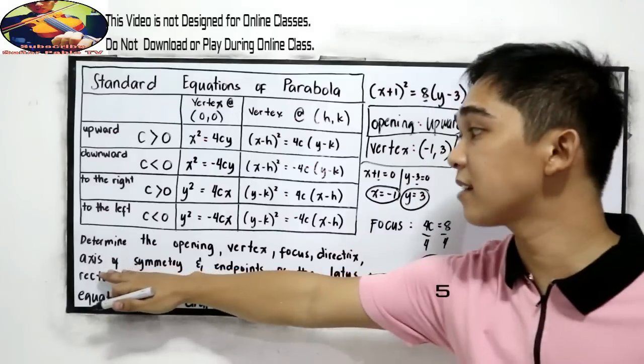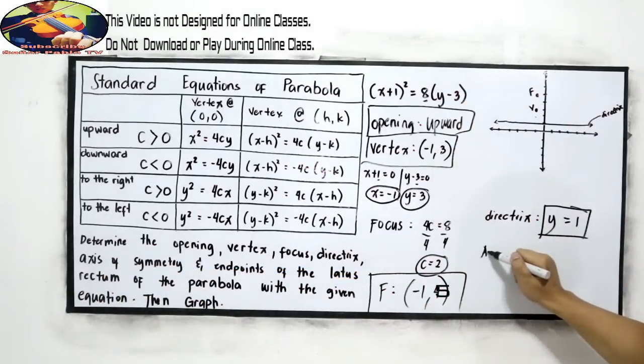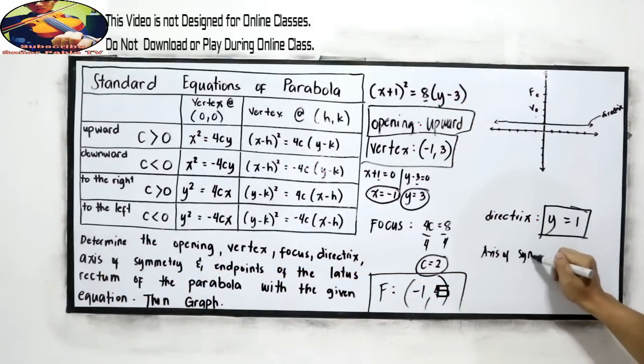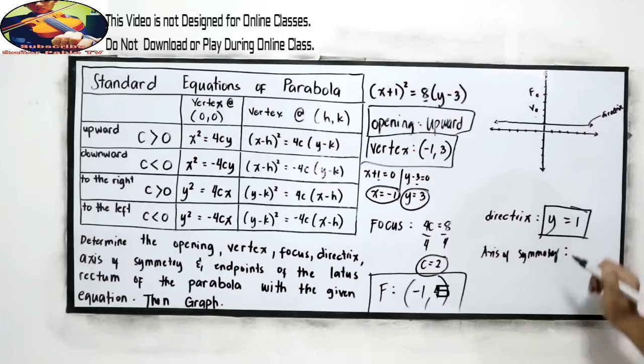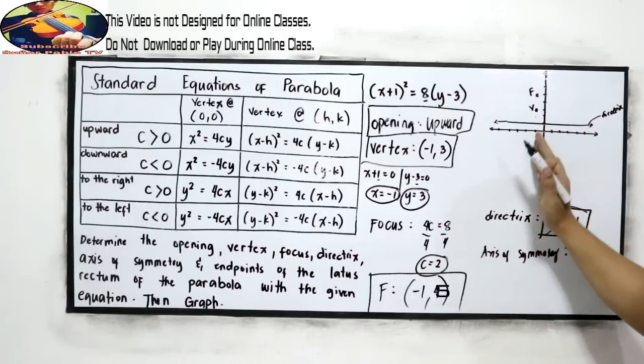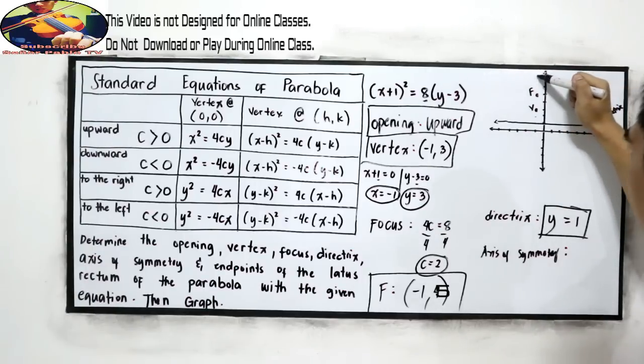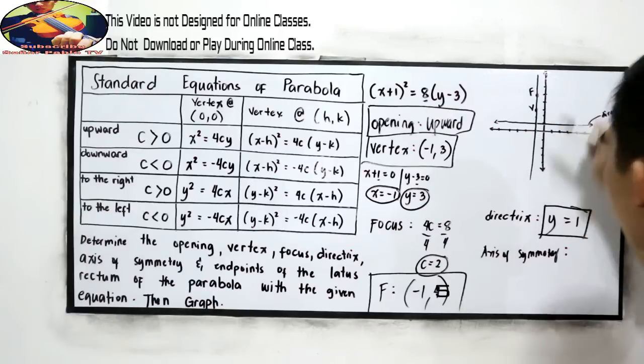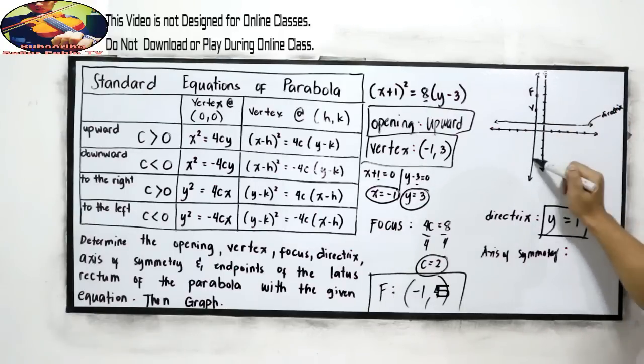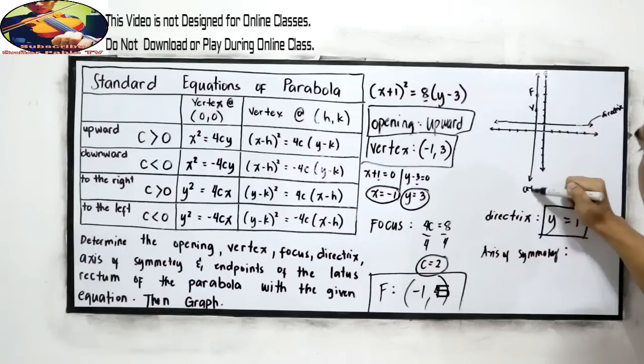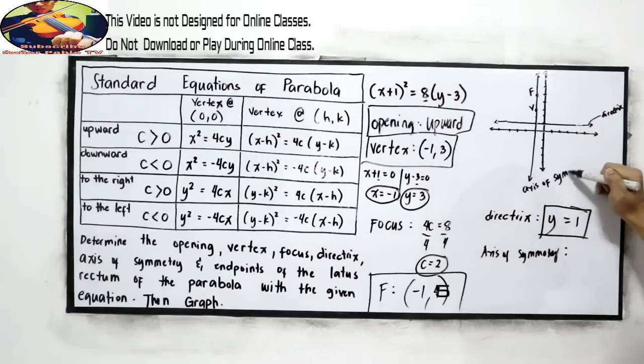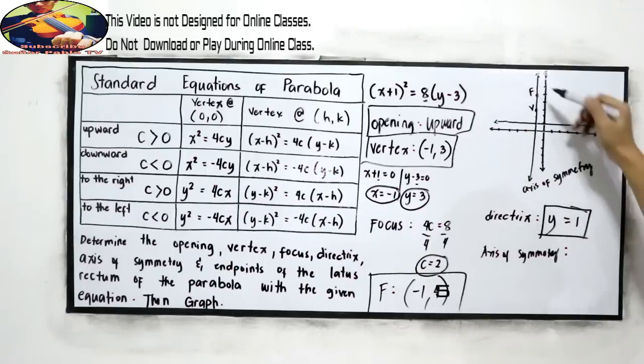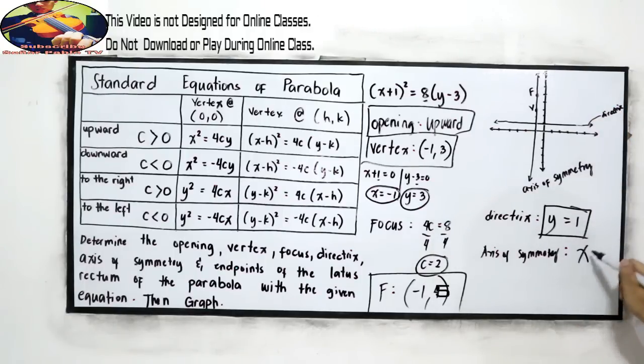And next, axis of symmetry. That is perpendicular to our directrix and passes through our focus. So it's here. This is our axis of symmetry. So x = -1.